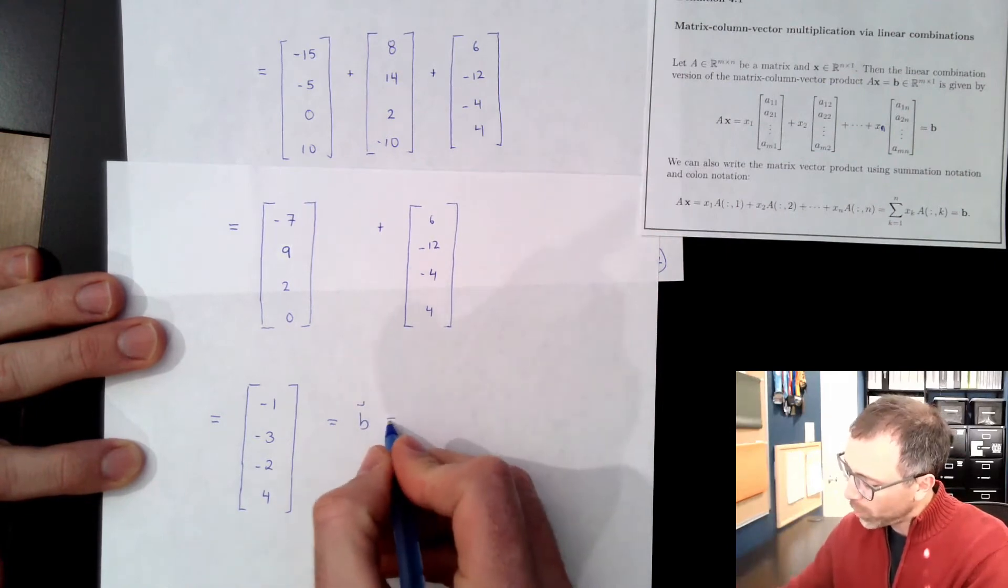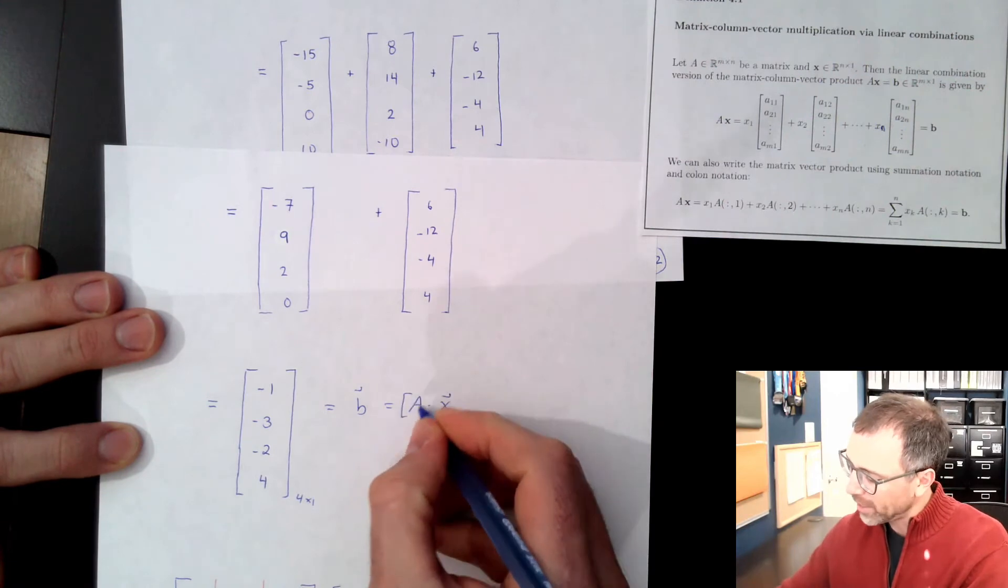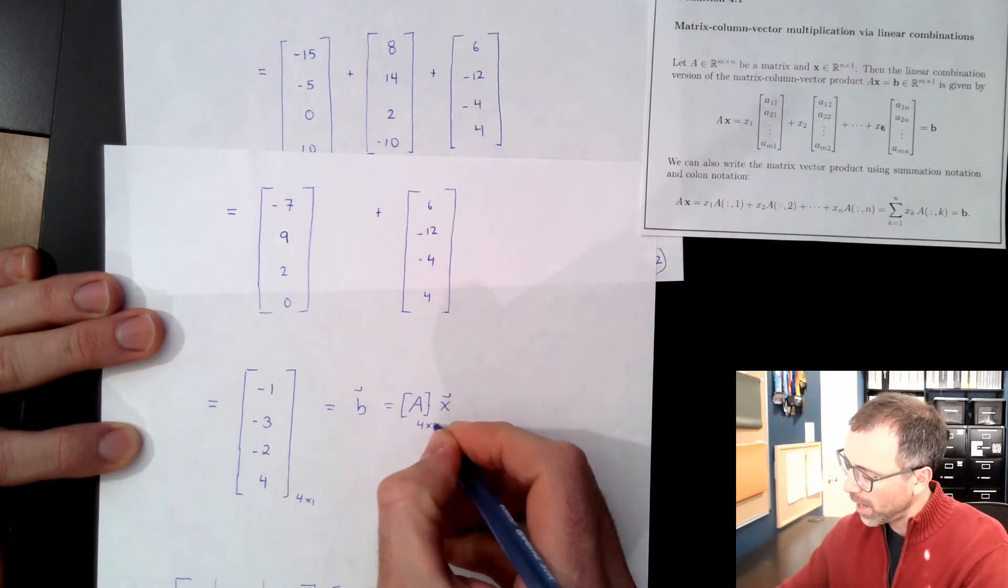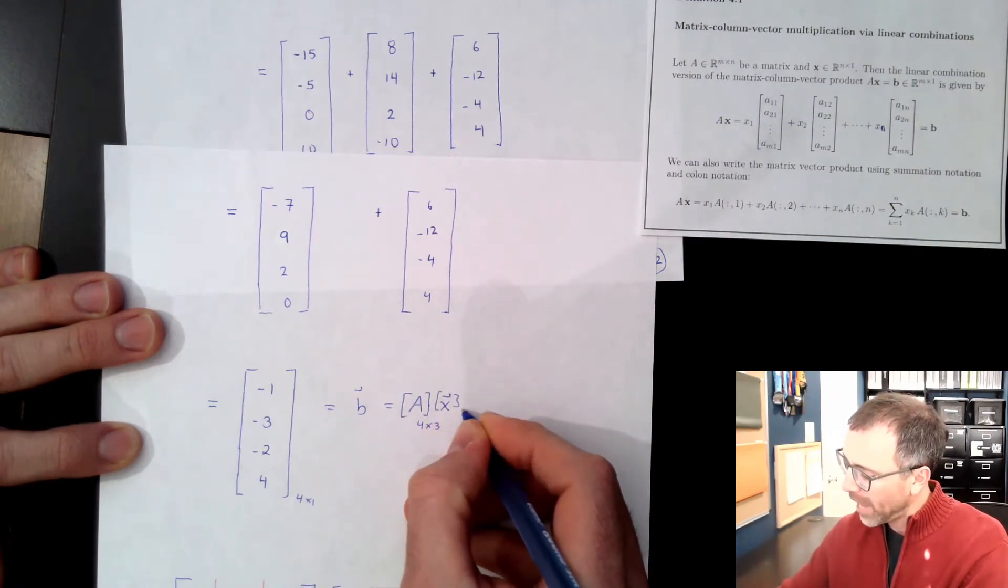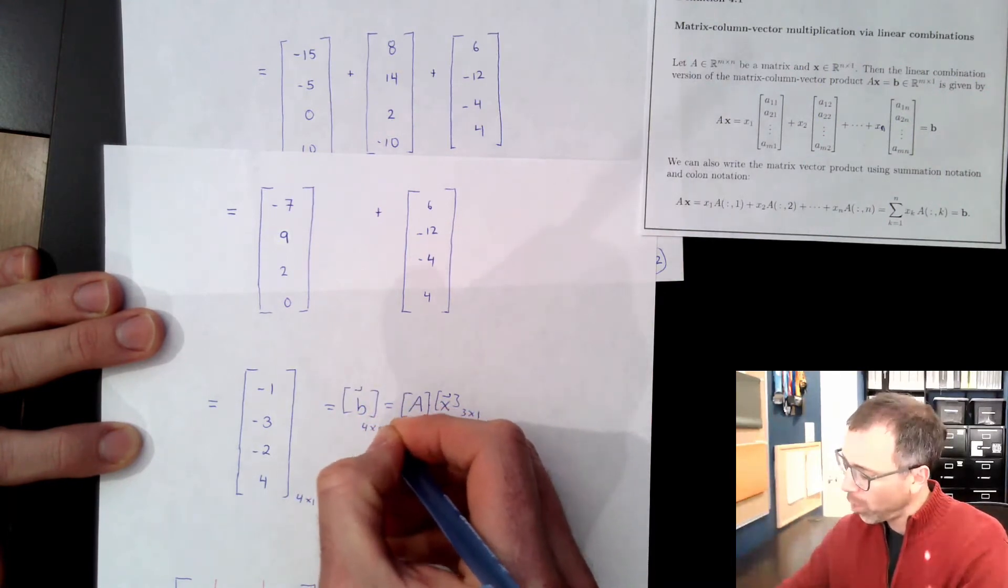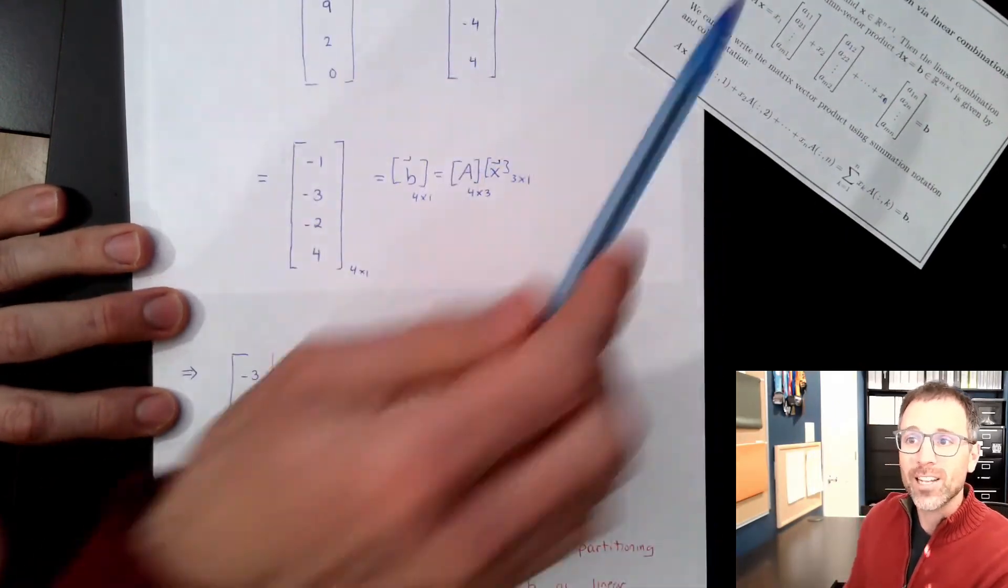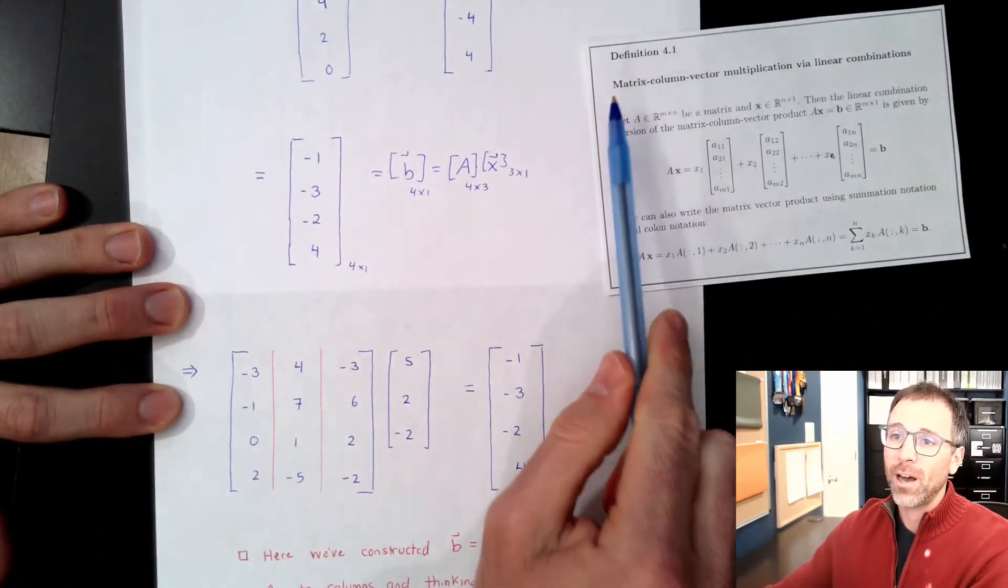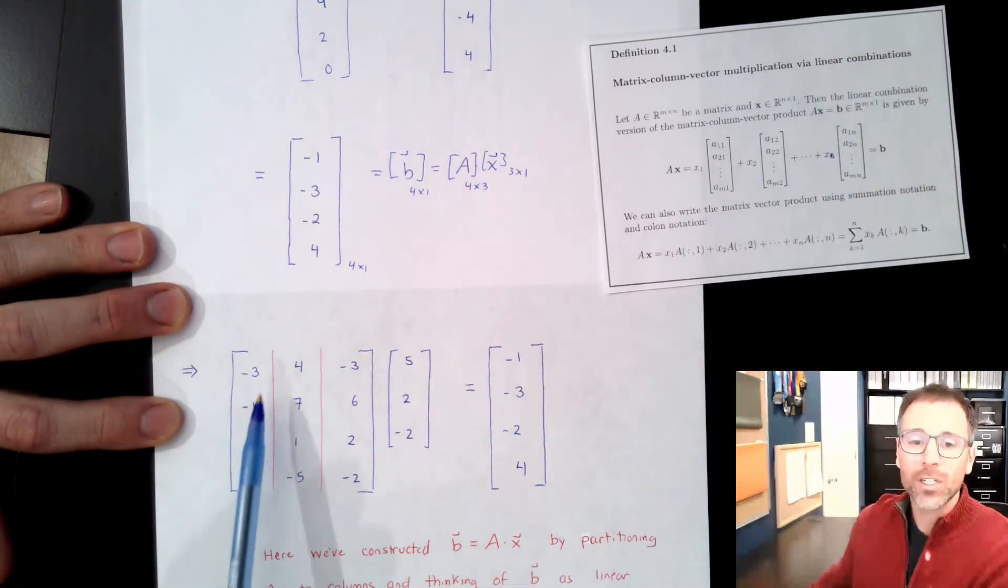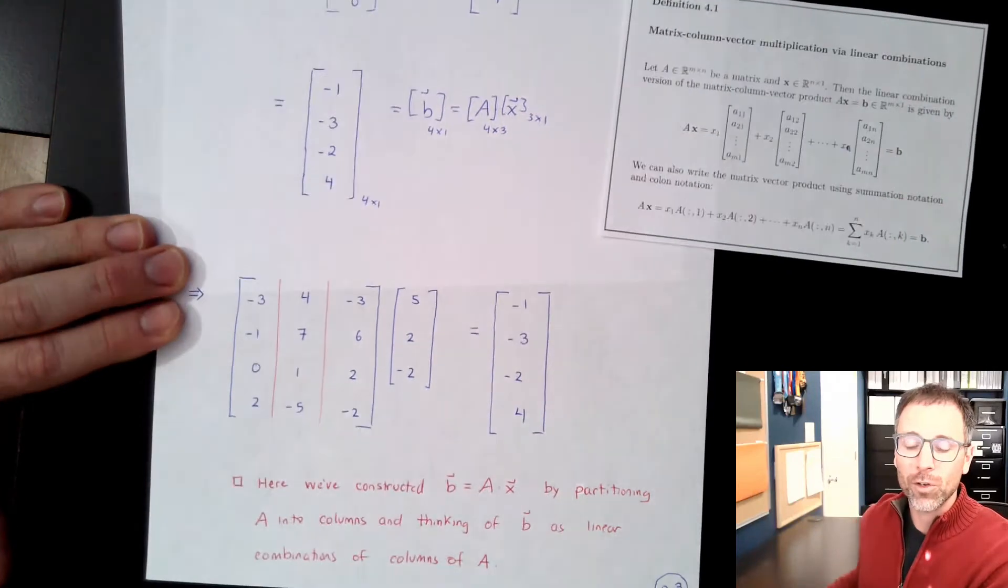Which we said was equal to A times x. This is a 4 by 1, which is exactly what we expected. Since A was a 4 by 3 and x was a 3 by 1, which means this vector would be a 4 by 1. And what we've just shown is that using this version of matrix-column-vector multiplication using linear combinations, A times x is b. And this is the value of b.